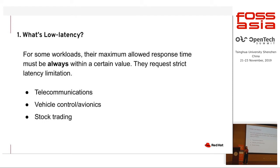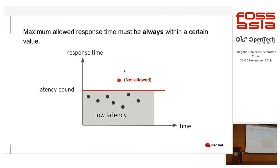So these examples show that low latency is important. There are more industries which may also need low latency. So what's low latency? The maximum allowed response time must always be within a certain value. Looking at this chart: the x-axis stands for time, the y-axis stands for response time, and the horizontal red line stands for the latency bound. The response time of each request should always be within the latency bound — the red spot exceeding it is never allowed. Low latency means the maximum response time must always be less than the latency bound.